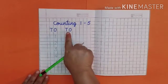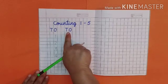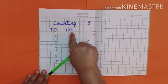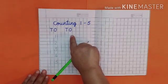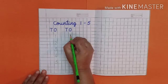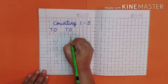First we will write tens and ones. We will write one to five under ones here. Here, write number one. Here, two.